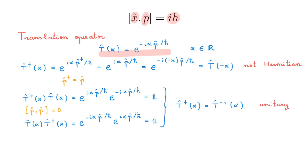If you need further details about unitary operators, check the video linked in the description. So far we have introduced T(α), called the translation operator, and found that its adjoint equals its inverse — making it unitary — and both are equal to T(−α). We haven't yet proved it truly translates states.